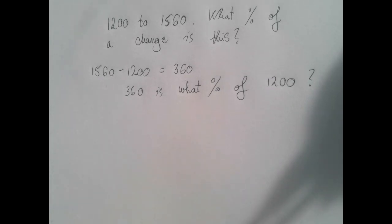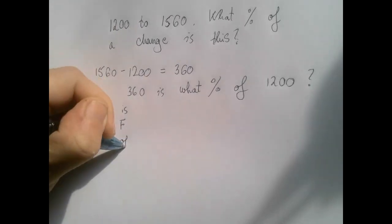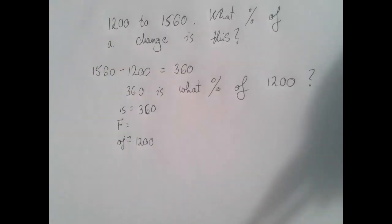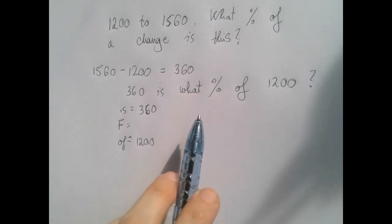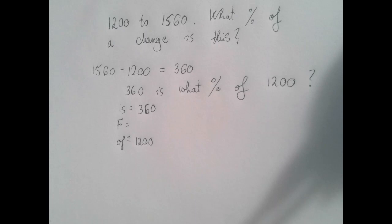So this is a type 2 percent problem: is, is fraction, types of. So 360 is the 'is'. The 'of' is 1200. And then what percentage? That's the same as what fraction, except for we want the fraction with the denominator of 100. Let's just hope for the best, but the fraction is x.